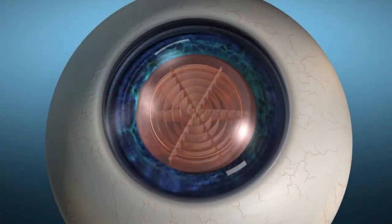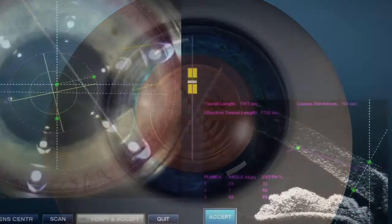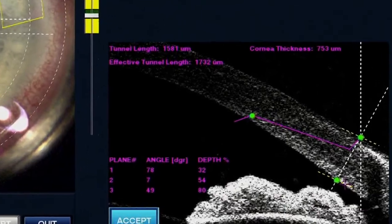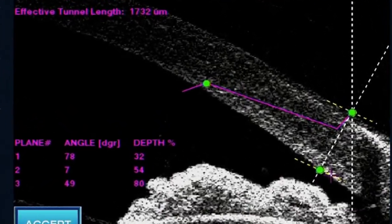Finally, arcuate and primary and secondary incisions are created. Trapezoidal incisions may be selected to create multi-planar primary and secondary incisions. The entire procedure, from applanation to treatment, takes less than two minutes.